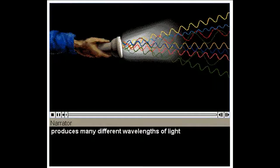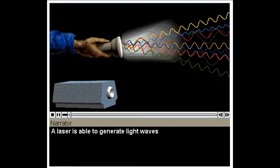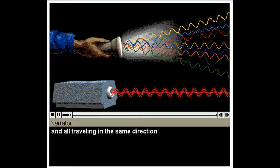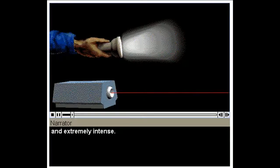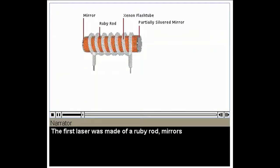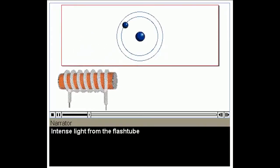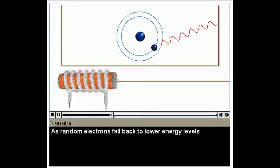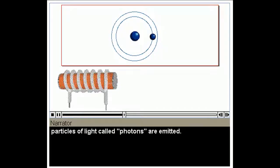An ordinary light source produces many different wavelengths of light that go off in all directions. A laser is able to generate light waves of a single wavelength, all in step with each other, and all traveling in the same direction. This makes laser light pure in color, and extremely intense. The first laser was made of a ruby rod, mirrors, and a xenon flash tube. Intense light from the flash tube excites electrons in the ruby's chromium atoms. The electrons are raised to higher energy levels. As random electrons fall back to lower energy levels, particles of light called photons are emitted.